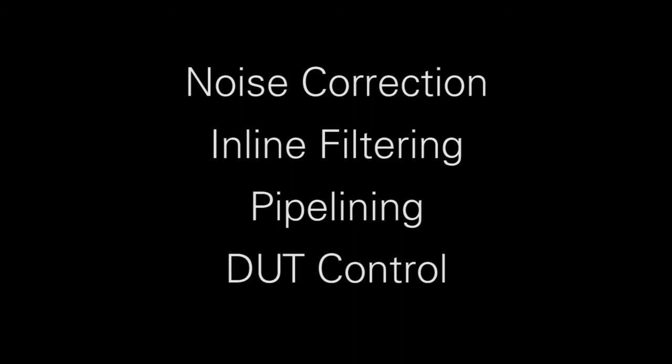By moving the processing from the host to the FPGA and reducing the throughput necessary, we can speed up measurement times, do more averaging, which gives users a higher confidence in their measurement. There are many other examples of things we can do, such as noise correction, inline filtering, pipelining, and don't forget device control with the digital I/O. All these things would be impossible to do on a traditional vector signal generator and vector signal analyzer, which is what makes the vector signal transceiver different and much more powerful.